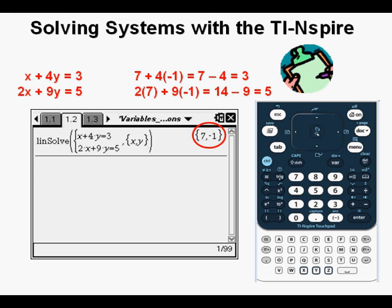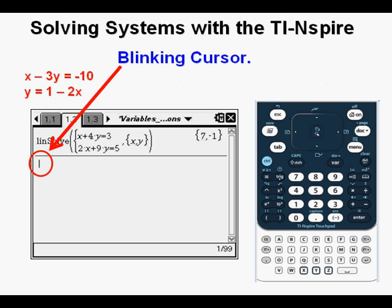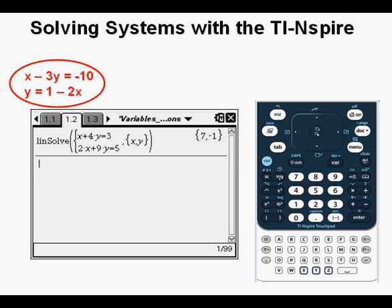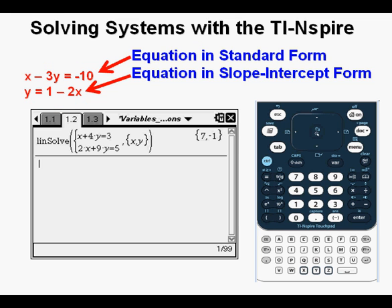Now we go on to the next problem. The cursor is blinking below so we can find the solution to another system. Let's look at this system: x minus 3y equals negative 10 and y equals 1 minus 2x. The curious thing about this system is that one equation is in standard form and the other one in slope-intercept form. If we were using a TI-84 to solve this one, we would either have to convert the standard form equation to slope-intercept form and solve by graphing, or take the slope-intercept form equation and change to standard form and solve, perhaps using matrices. But let's see how it's a whole lot easier with the TI-Nspire.